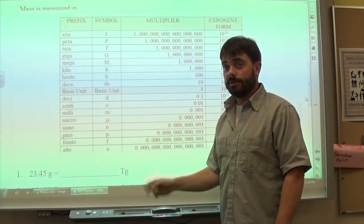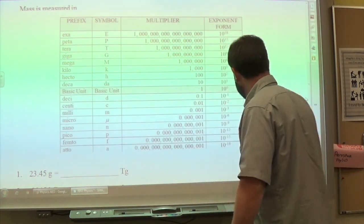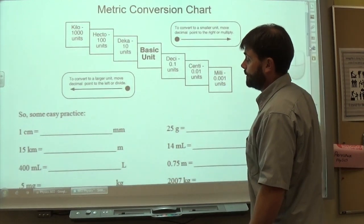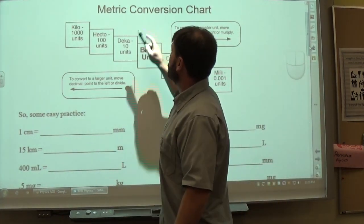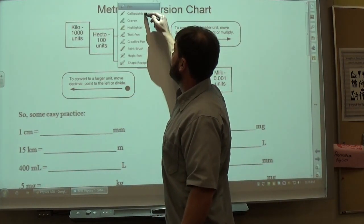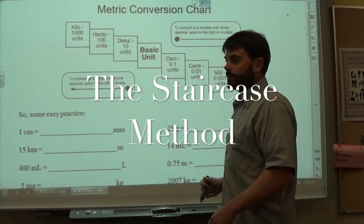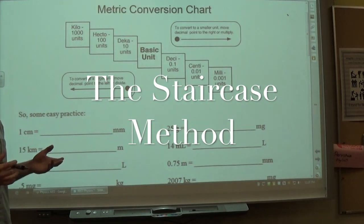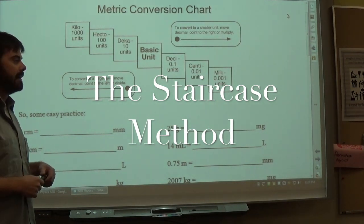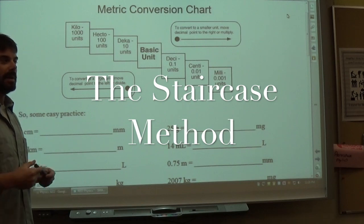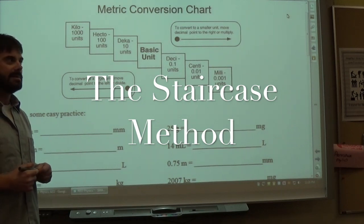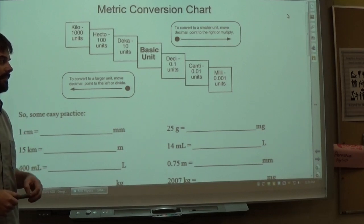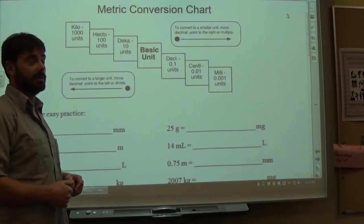I'm going to show you two different methods for doing metric conversions. The first method will work for any metric conversion you want to do. However, it gets a bit cumbersome when you're dealing with numbers larger than kilo or smaller than milli, because you have to move the decimal place a great distance, and that's not the most efficient thing to do.